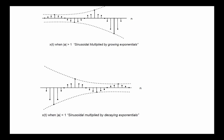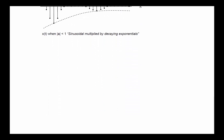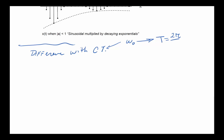There is one key difference with continuous time. In continuous time, every ω₀ could be used to find a new period — for every ω₀ there was a real number that worked. Unfortunately for discrete time, ω₀ must yield an n that is an integer. This relationship from continuous time is not directly true for discrete time.